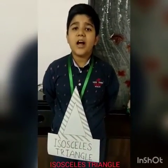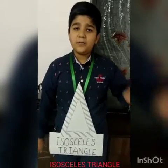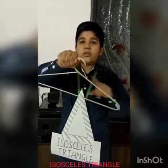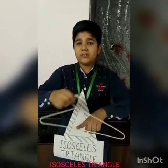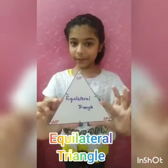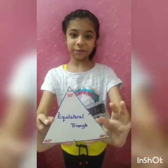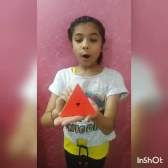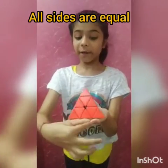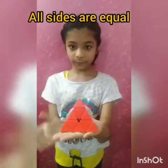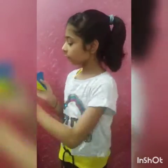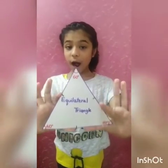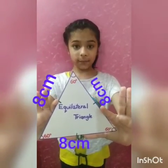Hi, I am an isosceles triangle. I have 2 equal sides — this and this are 20 cm each, and this side is 40 cm. I am an equilateral triangle. All my sides are equal in length, as all are 8 cm each.